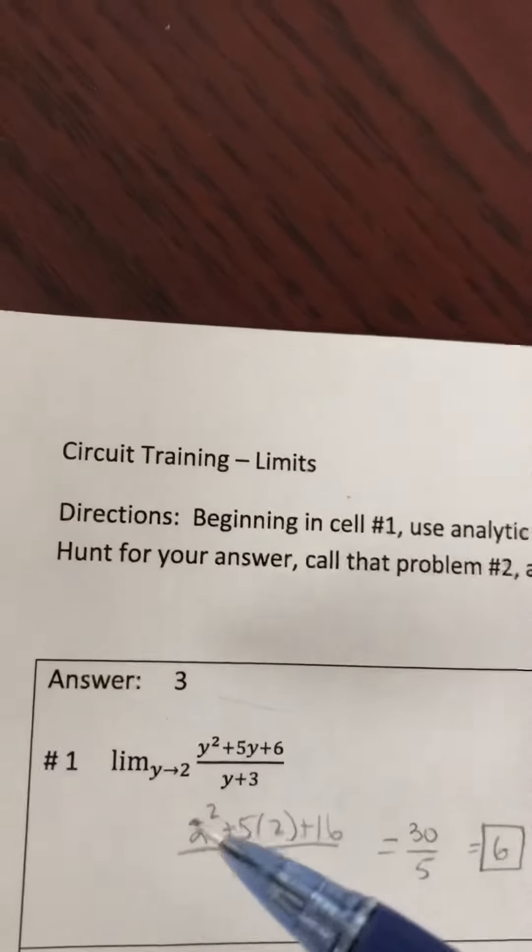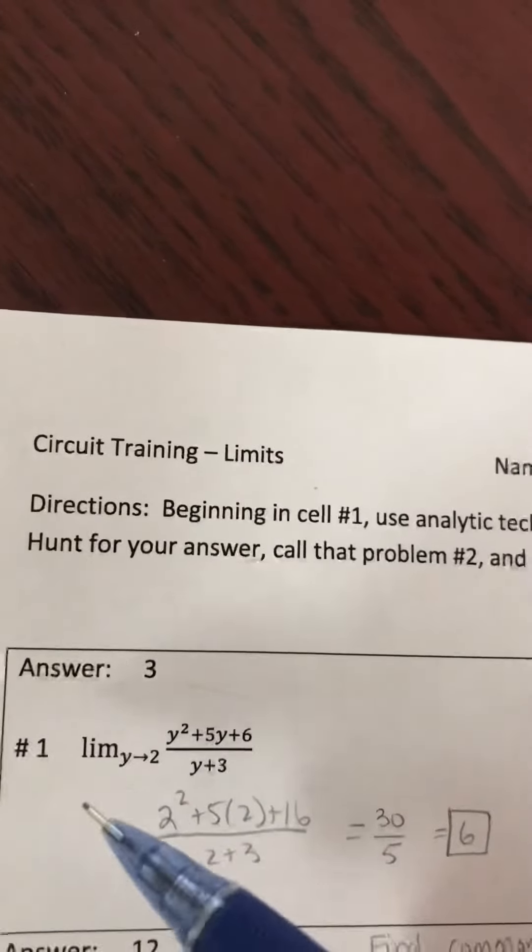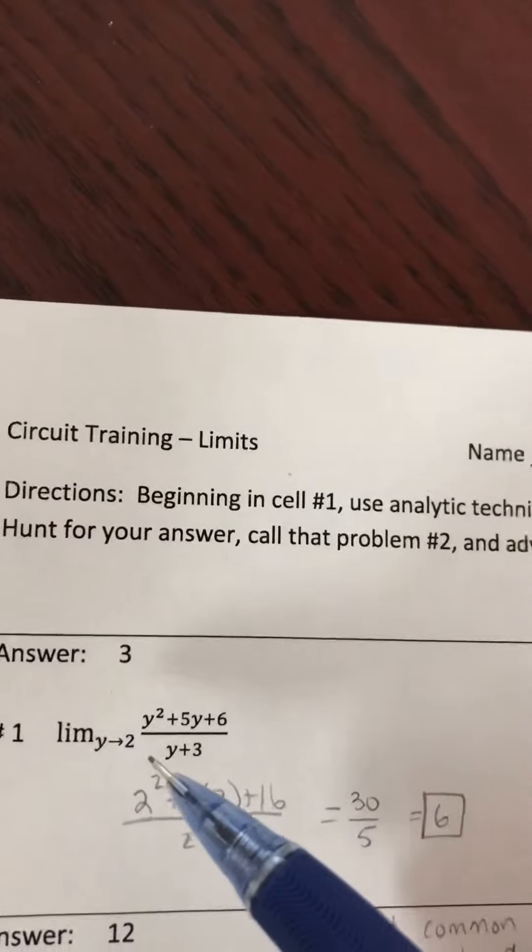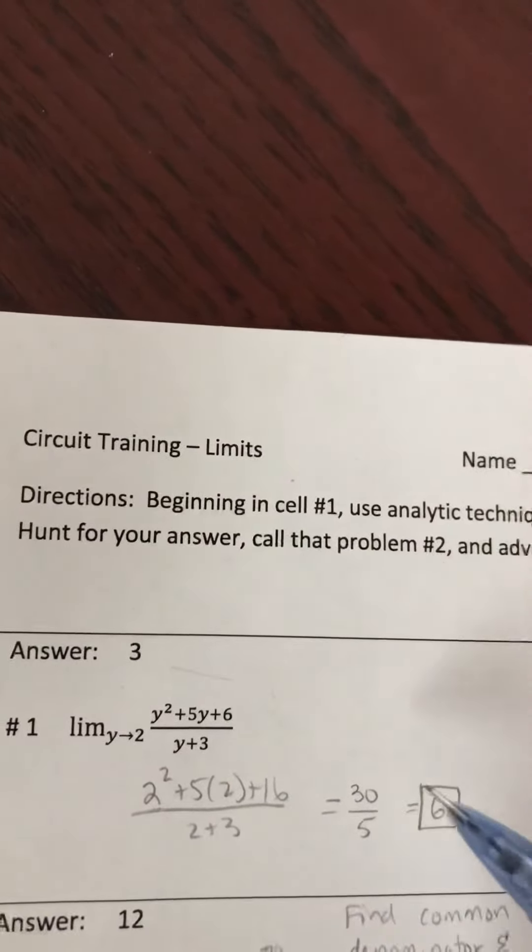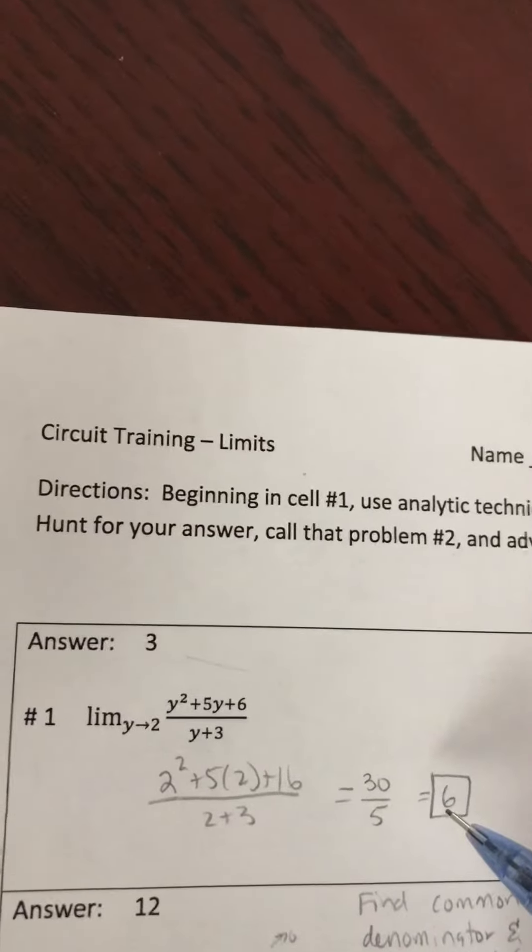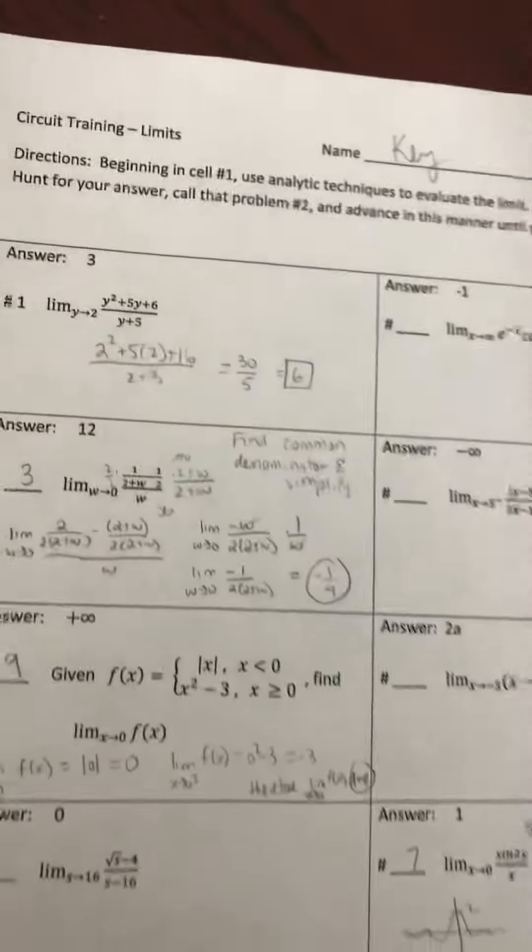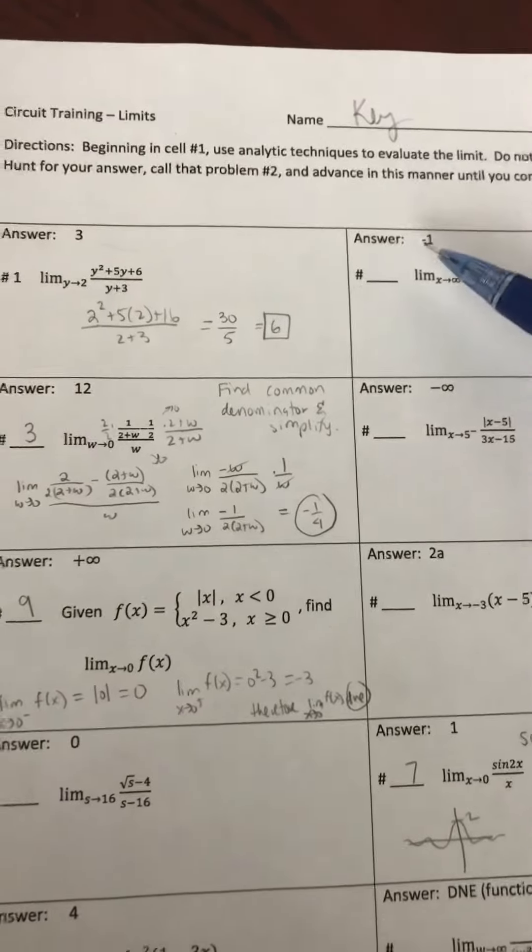Alright, so you always start with number one. You try to work out this problem—you're taking the limit as x approaches two. So you plug two in, see what you get. You end up getting 30 over 5, which equals 6.